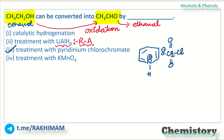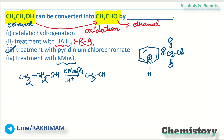Option 4: treatment with KMnO₄ — no. Because if you react CH₃CH₂OH with KMnO₄ in acidic medium, the reaction will not stop at the aldehyde stage; it will further oxidize beyond CH₃CHO. Oxidation can be stopped at the aldehyde stage only by using pyridinium chlorochromate. Therefore, option 3 is the right answer to this question.